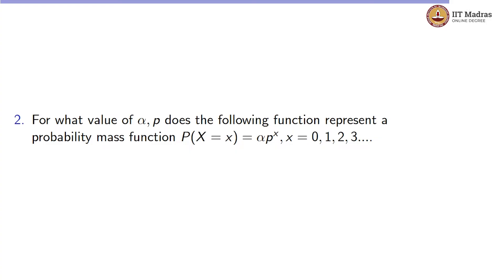Let us look at the second question. They are asking for what value of alpha and p does the following function represent the probability mass function: p(x) = αp^x for x = 0, 1, 2, 3, and so on to infinity.